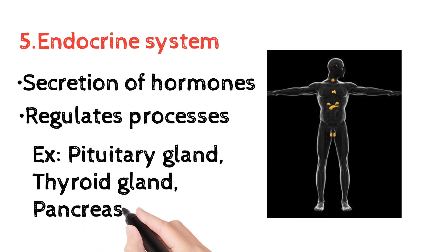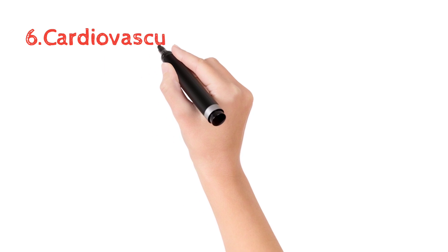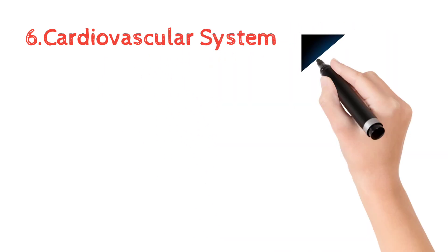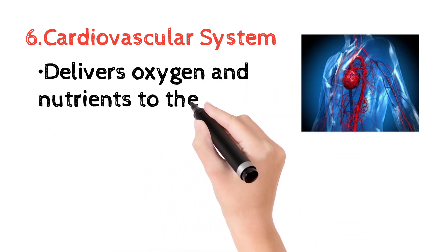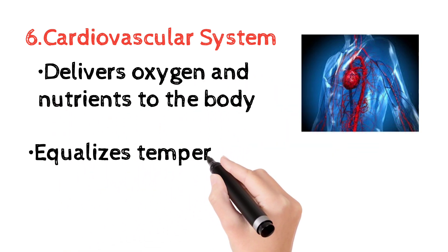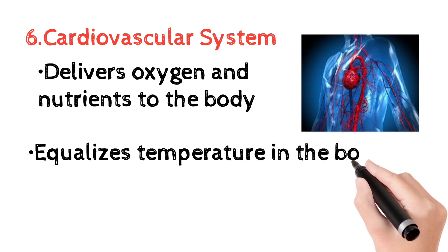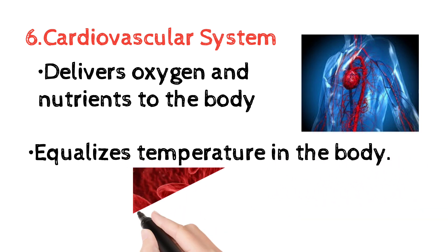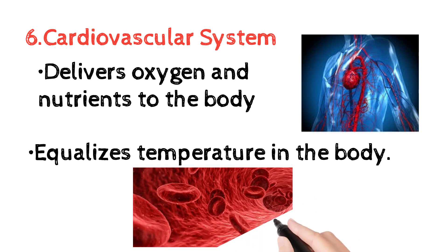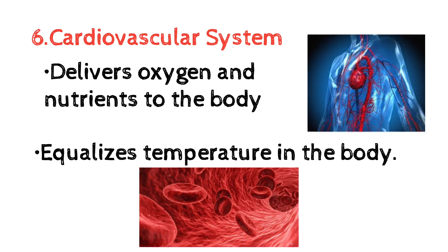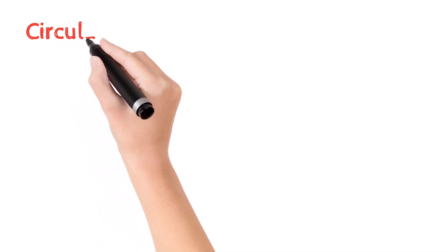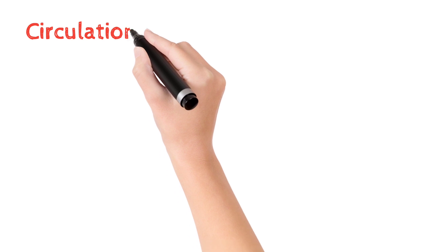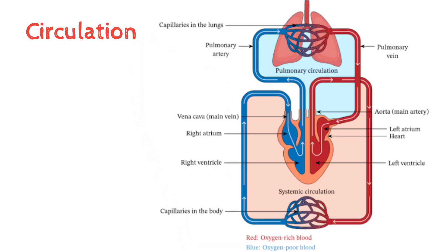The cardiovascular system delivers oxygen and nutrients to the tissues and equalizes temperature in the body. It delivers nutrients and oxygen through the blood. Let's briefly look at the circulation — the heart has four chambers: atria and ventricles.